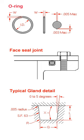An O-ring, also known as a packing or a toric joint, is a mechanical gasket in the shape of a torus. It is a loop of elastomer with a round cross section, designed to be seated in a groove and compressed during assembly between two or more parts, creating a seal at the interface.